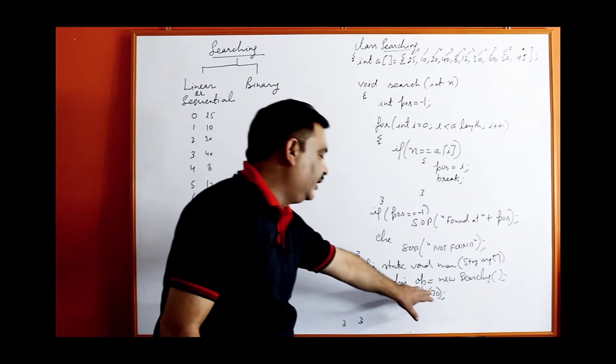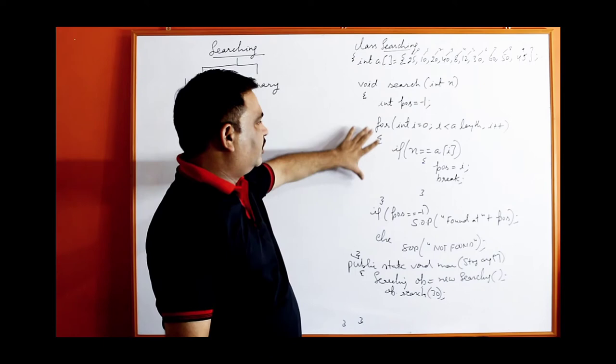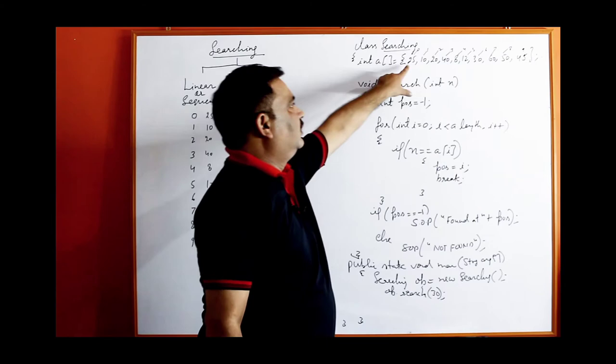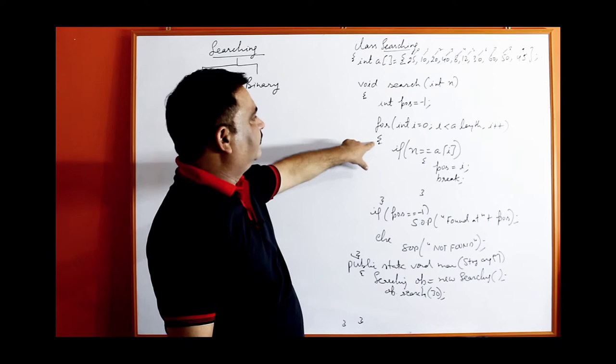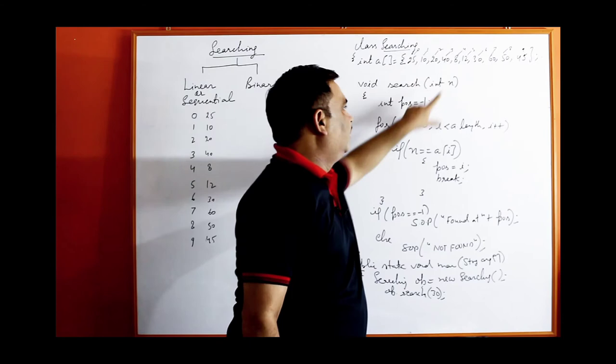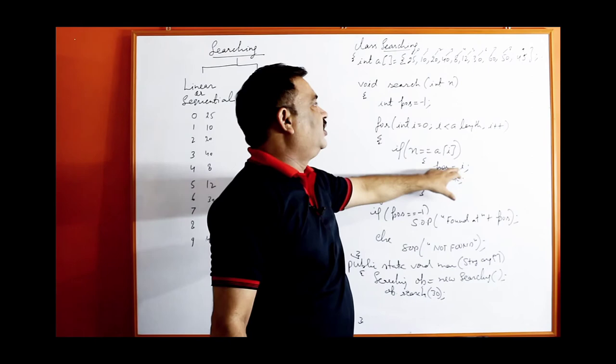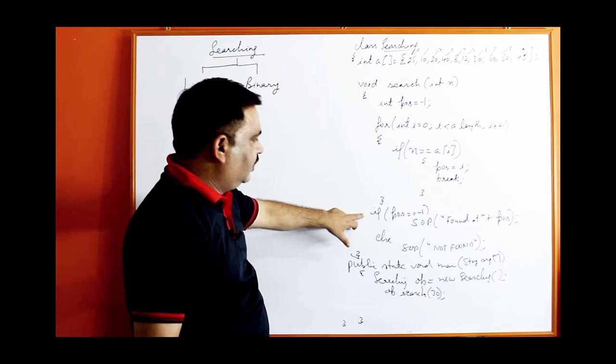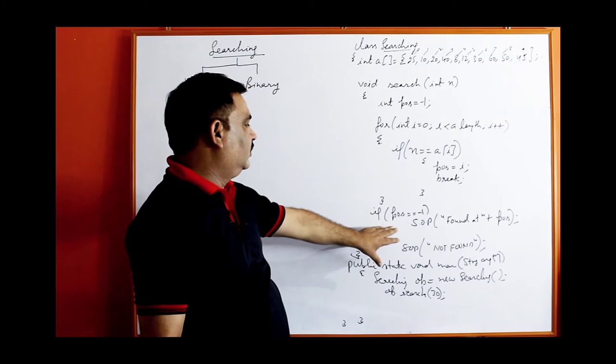Try to understand the working of this program. Suppose we have to search the value 30 in the search function, so n will be initialized with 30. Start the loop: check n=30 with a[0], not equal. Next, 30 compared with 10, then 20, then 40, then 8, then 12, then 30 — here the value is present. pos will be initialized with its index i=6, pos becomes 6, and the loop terminates.